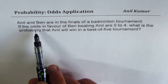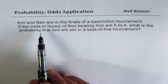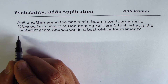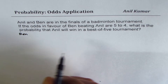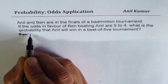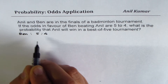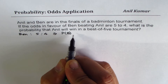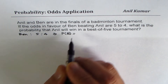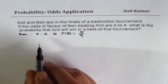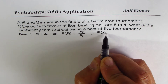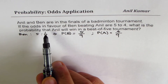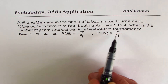Now let's understand the 'odds in favor of' statement. It says if the odds in favor of Ben beating Anil are 5 to 4, that really means that Ben will win 5 games to 4 — that is the odds. That really means that the probability for Ben to win is 5 out of a total of 9. And for Anil to win, the probability is 4 out of 9. So that is how you can directly translate odds in favor of an event into probability.